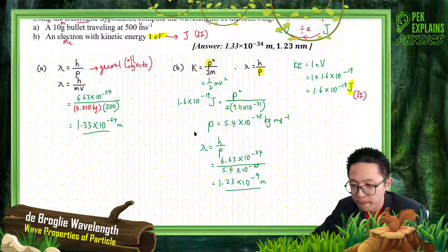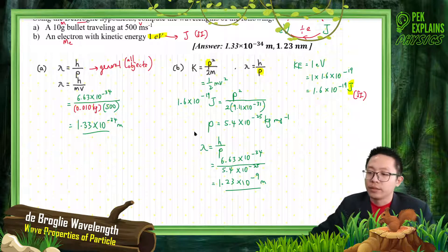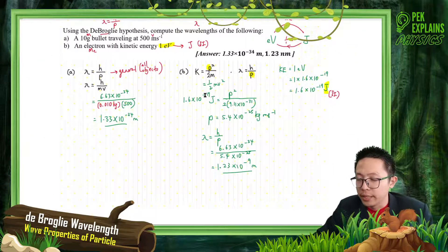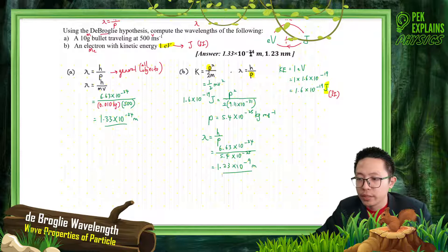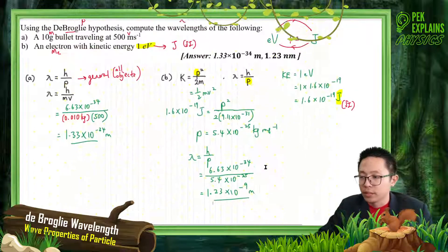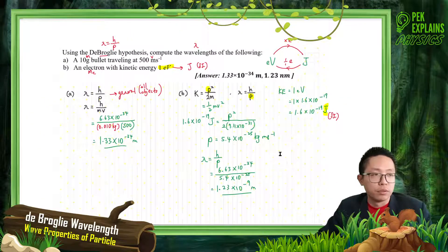Is the answer correct? Yeah, that's correct. So for the first question, it is 1.33 negative 34, and then the second question is 1.23 nanometers - exponent negative 9 meters. So that's correct. Let's go on to the next questions.